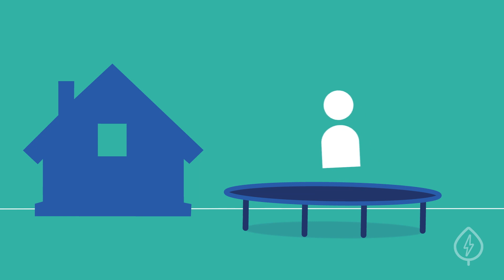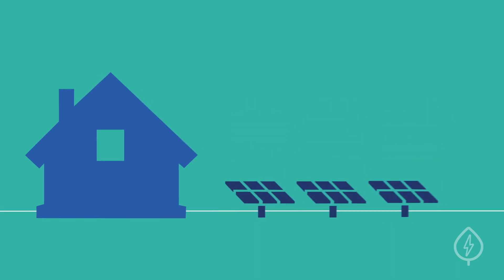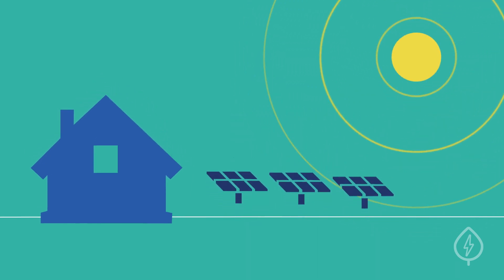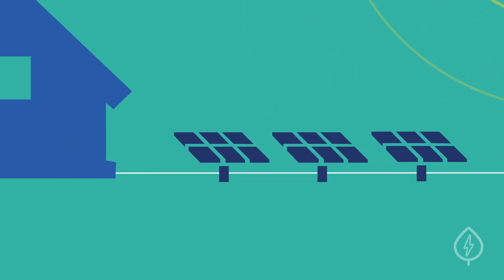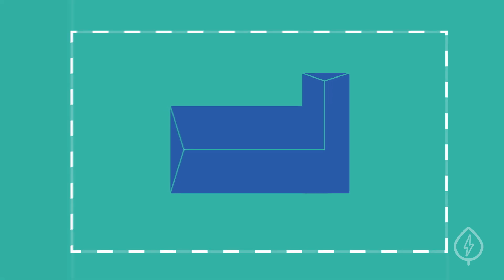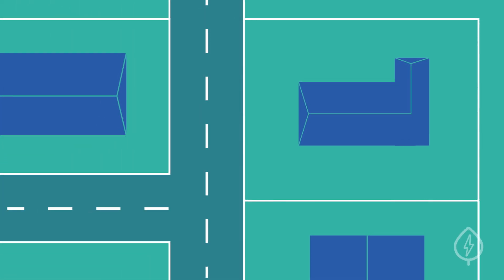If you decide on a ground-mount system, you'll need enough sunny space for the solar panels themselves, as well as space for digging, trenching, and laying wiring. Your city may have zoning laws that limit the amount of space on your property you can use, as some jurisdictions dictate how close a ground-mounted system can be to roads or property lines.